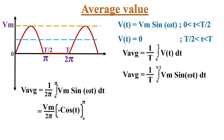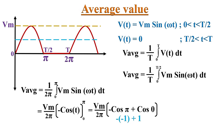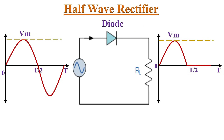That equals Vm/2π, and taking the integral of sin(ωt) gives −cos(t) with limits from 0 to π. So we get the average value as Vm/2π · (−cos π + cos 0), which equals 2Vm/2π, or Vm/π. In this way we get the average value of the half-wave rectifier as Vm/π, or 0.318 × Vm.